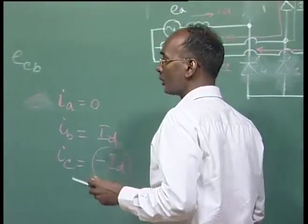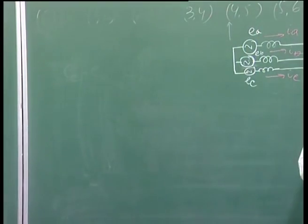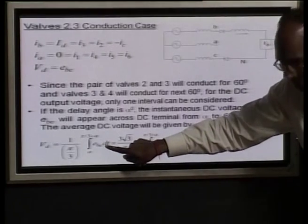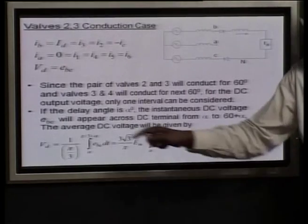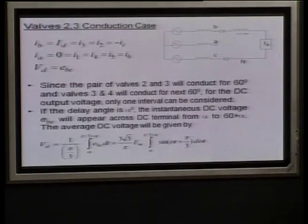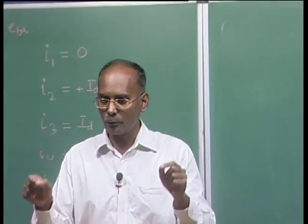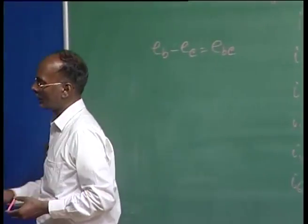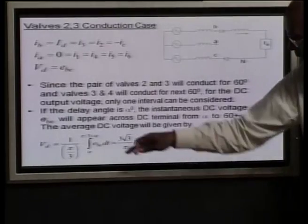To find the output voltage with a firing delay of alpha degrees: the average DC voltage V_d is obtained by integrating E_BC over one pulse interval. Since the converter is six-pulse with symmetrical patterns, we integrate over pi/3 (60 degrees). The average V_d equals (3/π) times the integral of E_BC d(ωt) from (60° + α) to (π/3 + α), where E_BC equals √3 · E_m · sin(ωt + π/3).